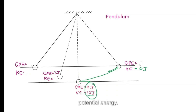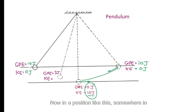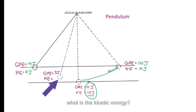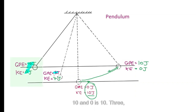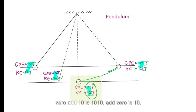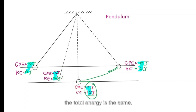The total energy is always 10 joules. At the top, GPE is 10 joules and KE is zero. Somewhere in the middle, if GPE is 3 joules then KE must be 7 joules, because the total must always be 10. So at any point in this example the total energy is the same — energy is conserved.